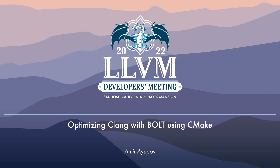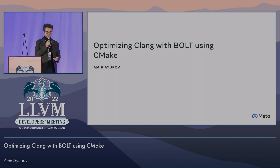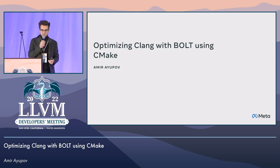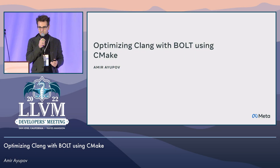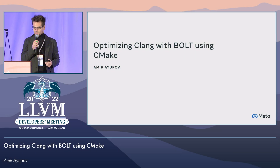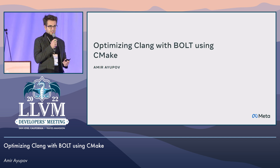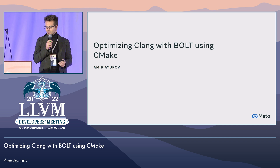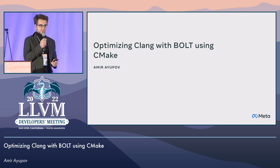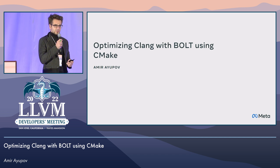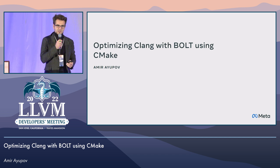Hello and thank you for coming to this talk. My name is Amir. I work on Bolt at Meta. Bolt is a post-link binary optimizer. This talk is about optimizing Clang with Bolt in an automatic fashion using CMake — automation made possible by upstreaming Bolt to the LLVM monorepo earlier this year.